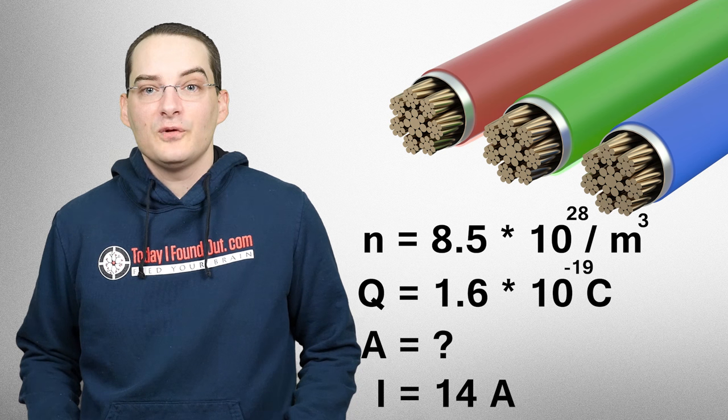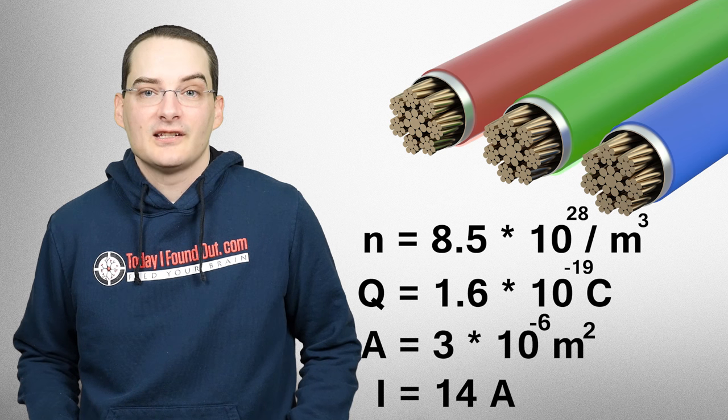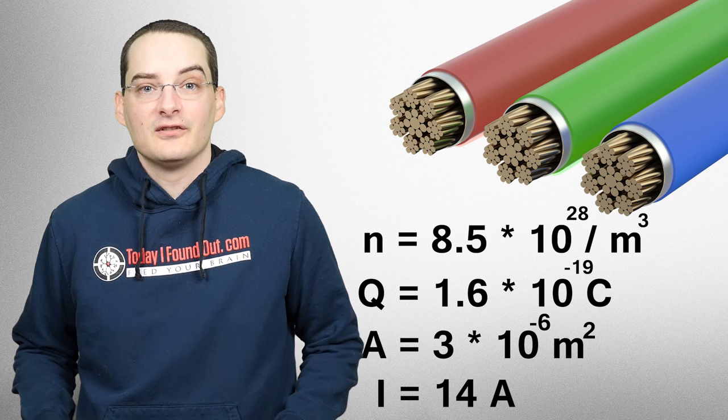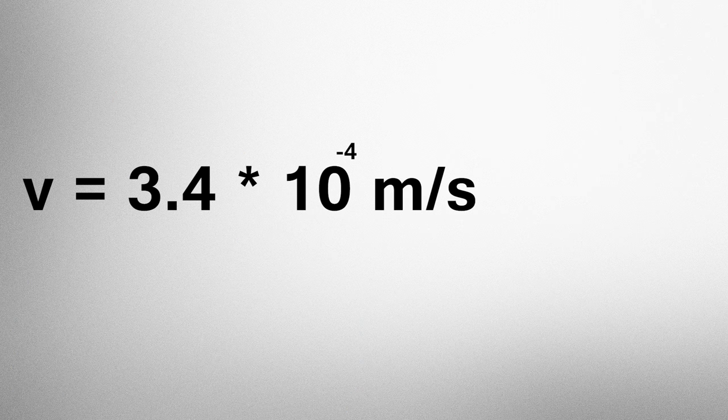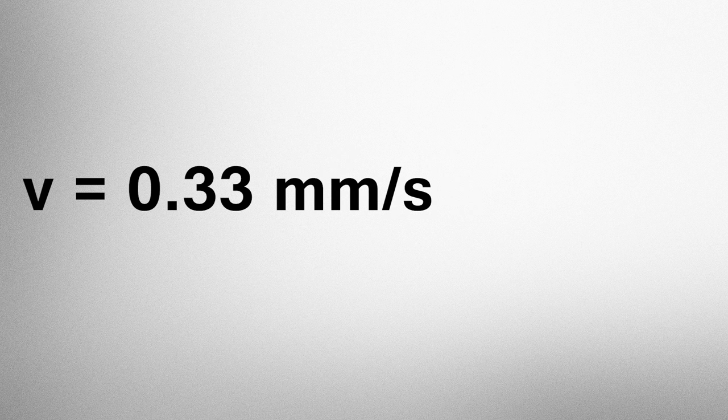For example, suppose you have a current of 14 amps and a copper wire with a cross section of 3 times 10 to the negative 6 meters squared. Plug in all the numbers, and you get that the electrons are moving at a speed of 3.4 times 10 to the negative 4th meters per second, or about a whopping 1 third of a millimeter per second.